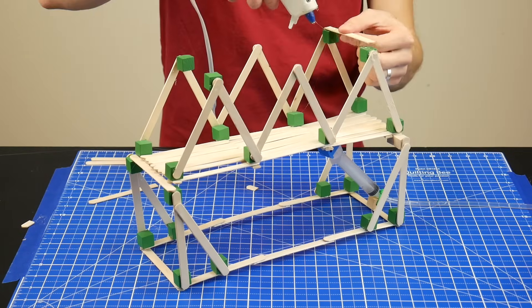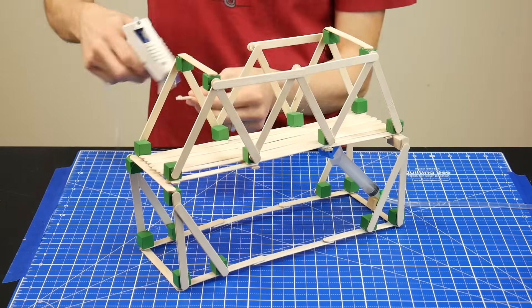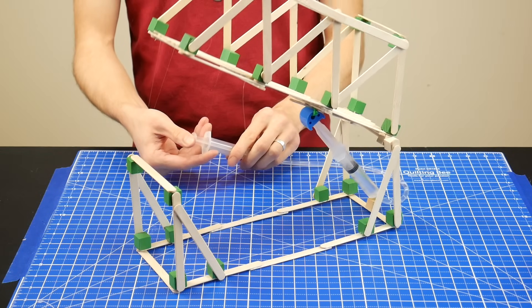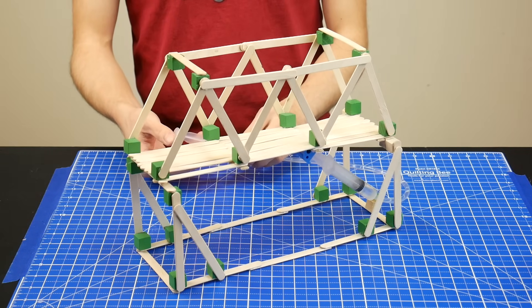The key to building a convincing-looking truss bridge is just to use a regular triangular pattern, and be sure to use craft cubes to hold up the sticks.